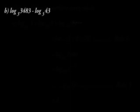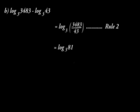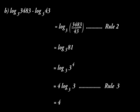For B, log to base 3 of 3,483 minus log to base 3 of 43 is equal to log to base 3 of 3,483 over 43. That is following rule 2. This gives us log to base 3 of 81 and we shall end up with 4 as the answer.